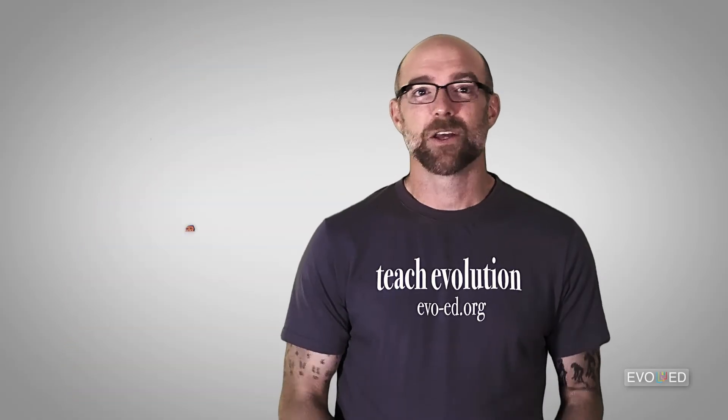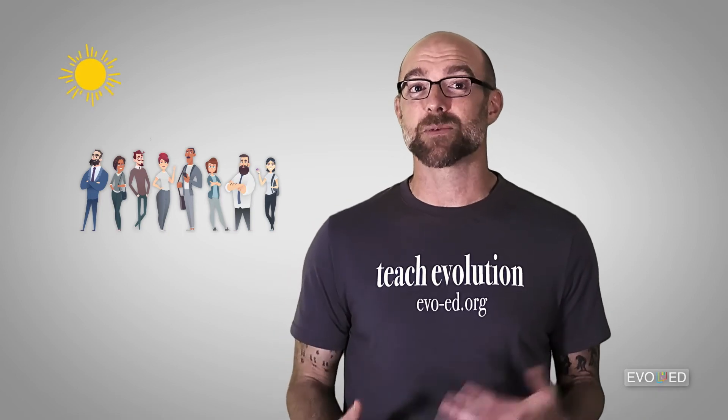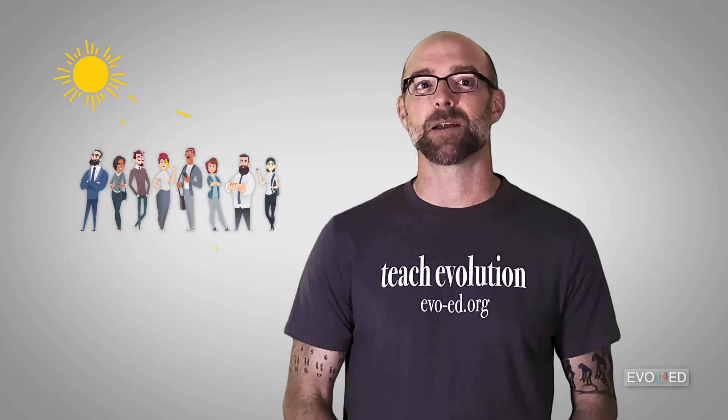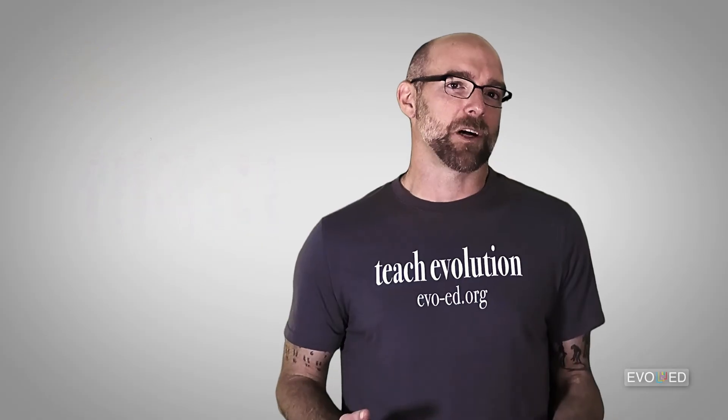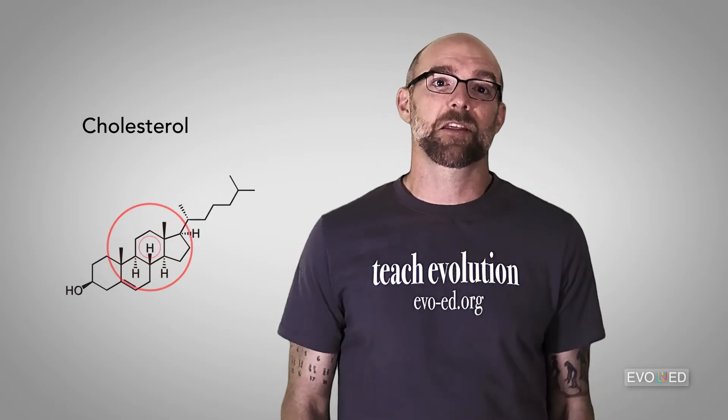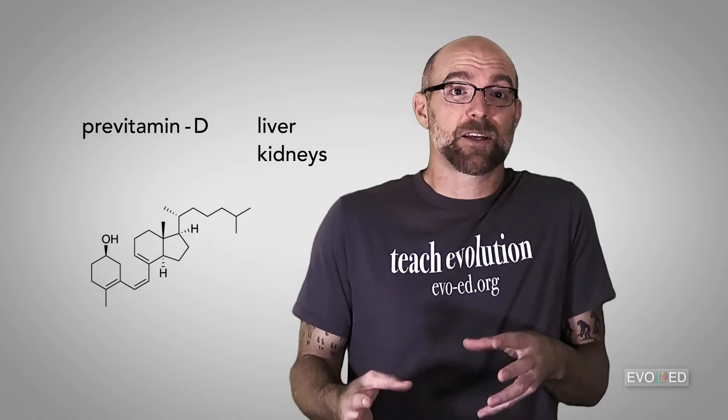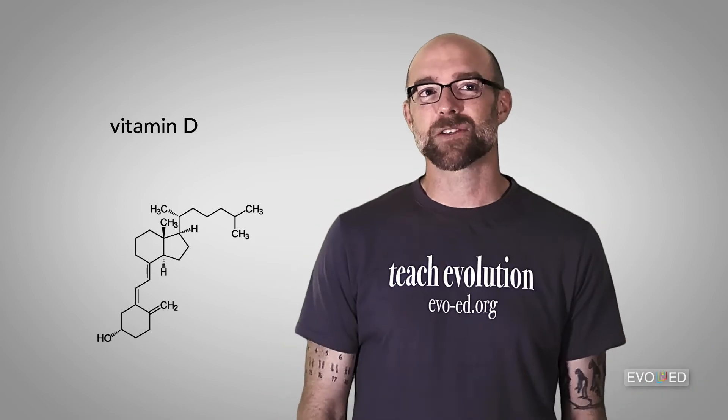One last thing. Your skin is also the primary part of you that interacts with the light that shines down from the sun. There's a type of cholesterol in our skin cells called seven-dehydrocholesterol. This is just regular cholesterol that's missing a hydrogen on the seventh carbon in the molecule. When seven-dehydrocholesterol intercepts photons of light from the sun, it gets converted into a molecule called pre-vitamin D. Your liver and kidneys then take pre-vitamin D and convert it into ordinary vitamin D. But the whole process starts in your skin cells.